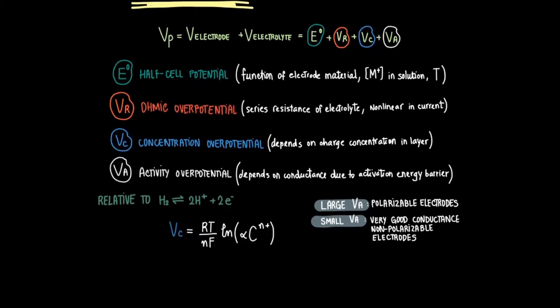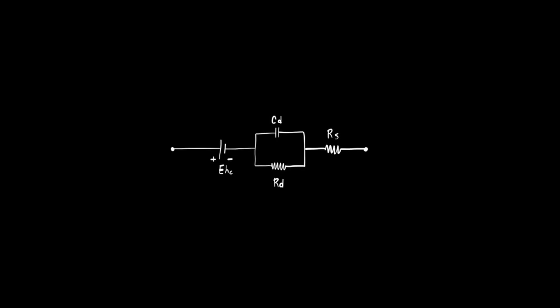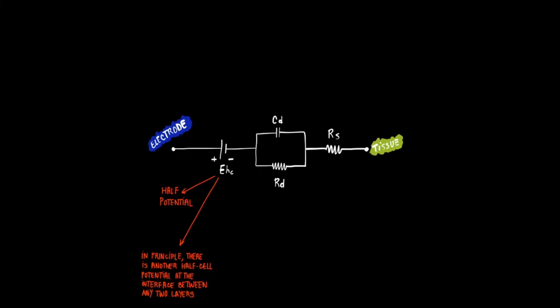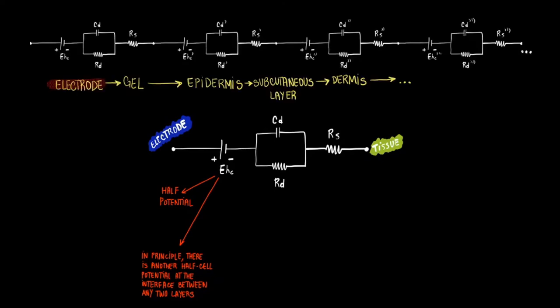This is the simple model schematic for the electrode potential. We start with the half cell potential being represented by a single cell. In principle there will be another half cell potential at the interface between any two layers through the electrode skin interface.